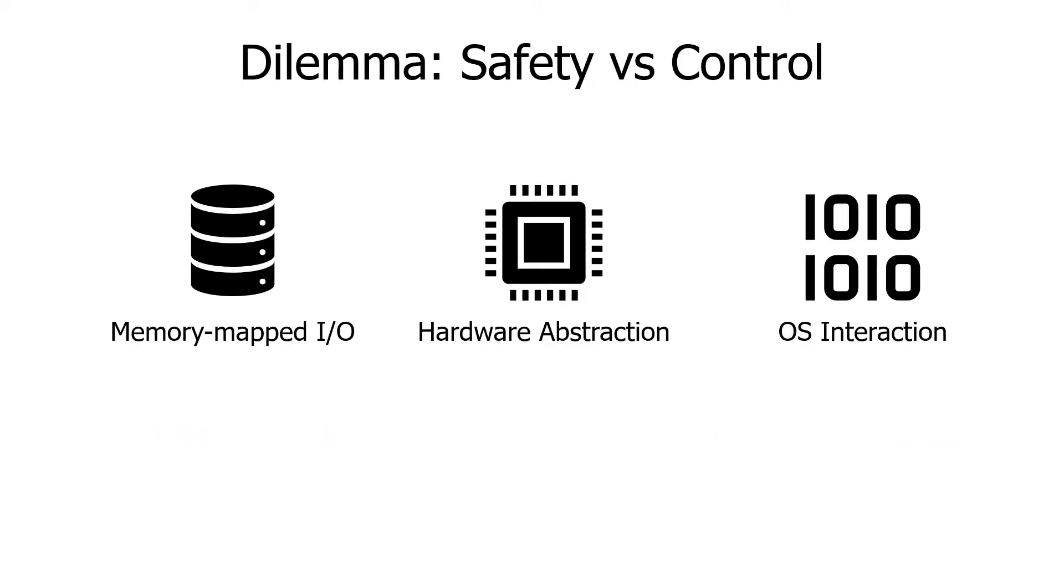However, there is an inherent dilemma between safety and control. Certain operations cannot be handled with safe languages because they are not part of the language runtime. Such operations include memory mapped I/O and interaction with hardware or the operating systems. As a system programming language, Rust needs to support these cases.